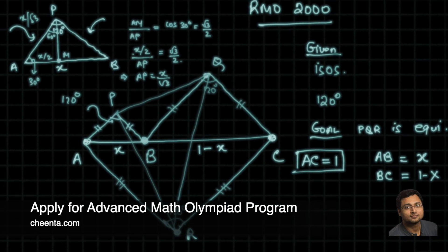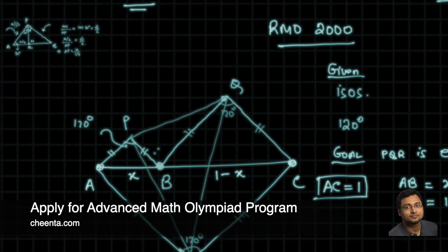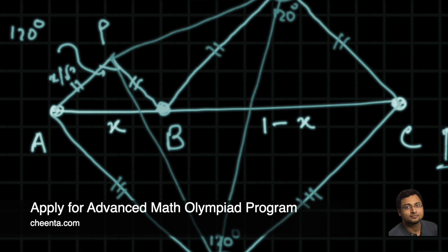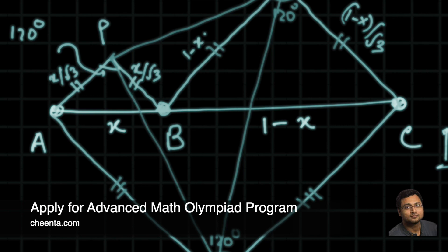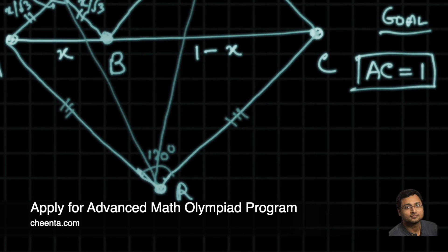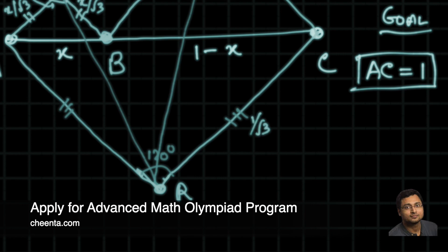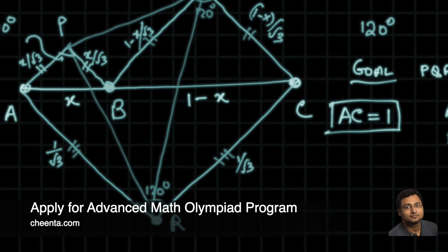So we know that AP equals x/√3 and BP also equals x/√3. Using the same principle for triangle BQC where the base is 1−x, we get BQ and CQ each equal to (1−x)/√3. And for triangle ARC with base AC = 1, we get AR and CR each equal to 1/√3. So we now have all the side lengths needed.